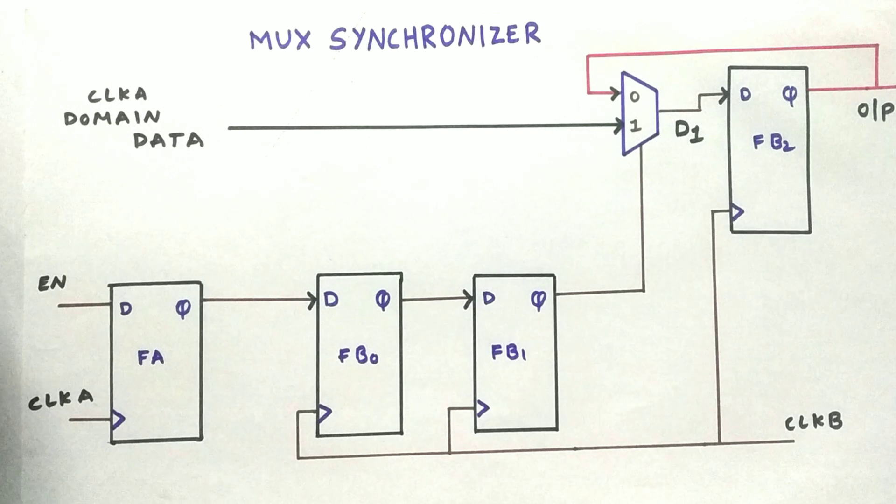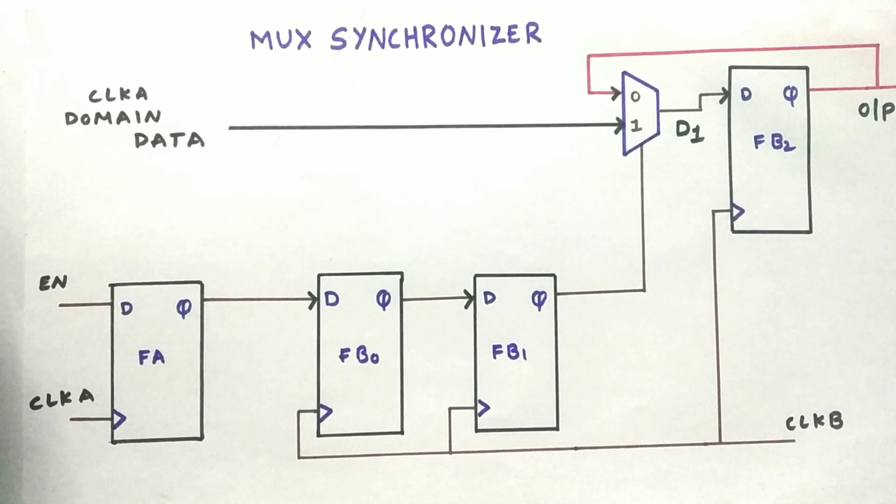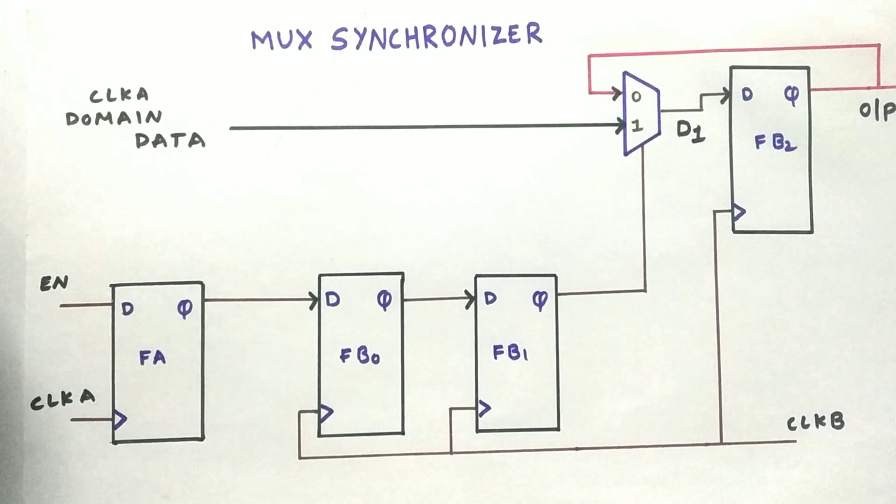The problem with the two-flop synchronizer is that it can synchronize a single bit at a time. A single bit at a time. That is the major problem.